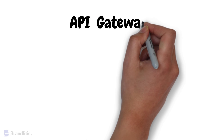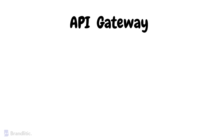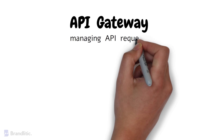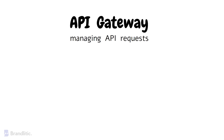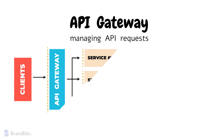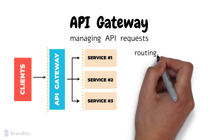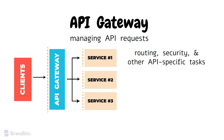In API Gateway, the purpose is specifically designed for managing API requests. They serve as an entry point for clients to access various functionalities of APIs, handling routing, security, and other API-specific tasks.